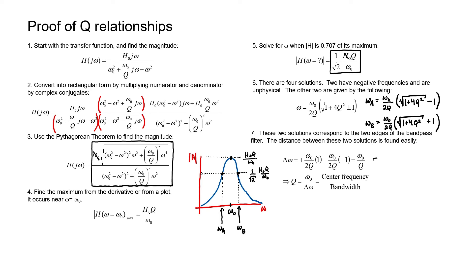Let's find the distance between these two frequencies. Taking omega-b minus omega-a gives us delta-omega, which works out to be omega-naught over Q. Rearranging, we can swap the positions of Q and delta-omega to find an expression for Q. Therefore, we can conclude that Q is just the center frequency divided by the bandwidth. That relationship came about because of the way Q was defined based on its position in the denominator of the transfer function — not based on the positions of inductors, capacitors, or resistors in any actual circuit.